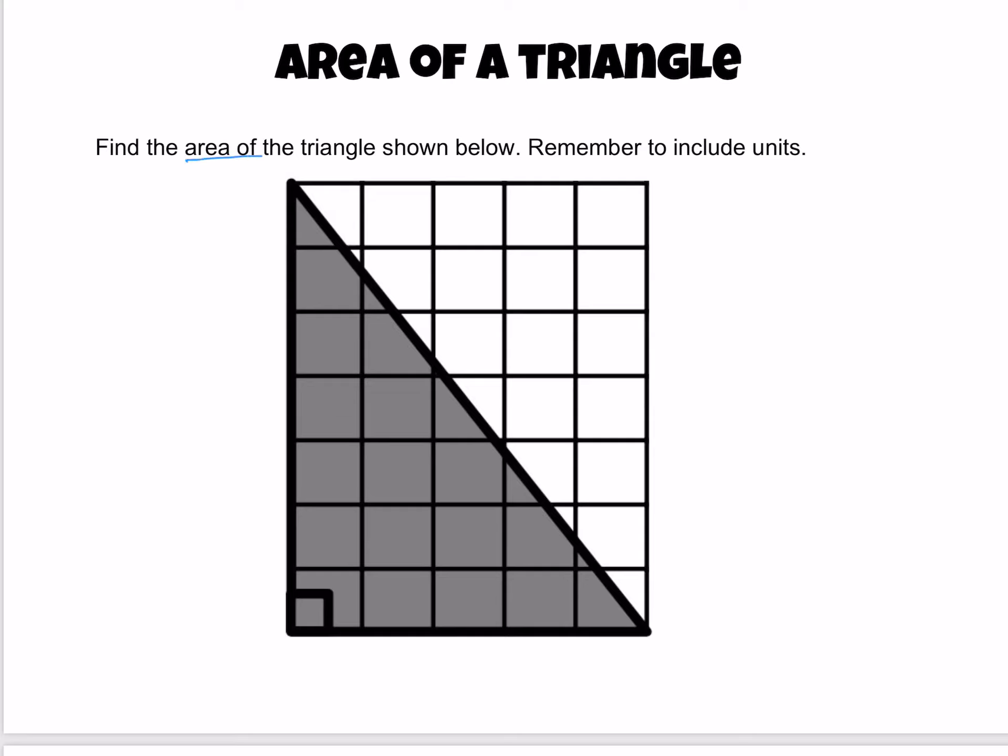Now the first thing we need to do for the area of the triangle is write down the formula. Two ways to write it: base times height over two - remember that's divided by two - or half base height. So that's the most important and first step.